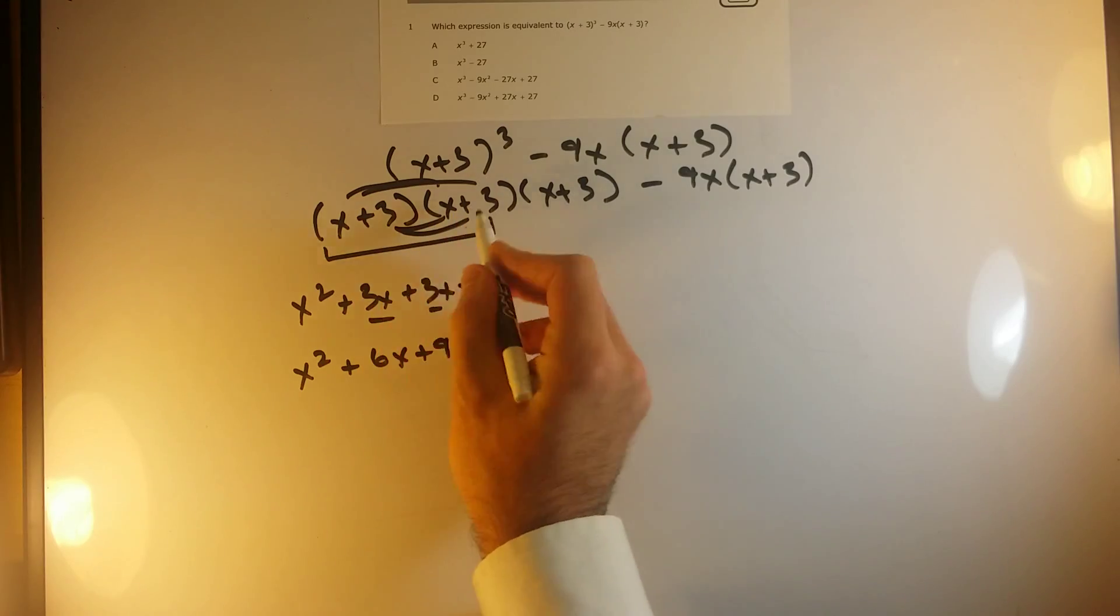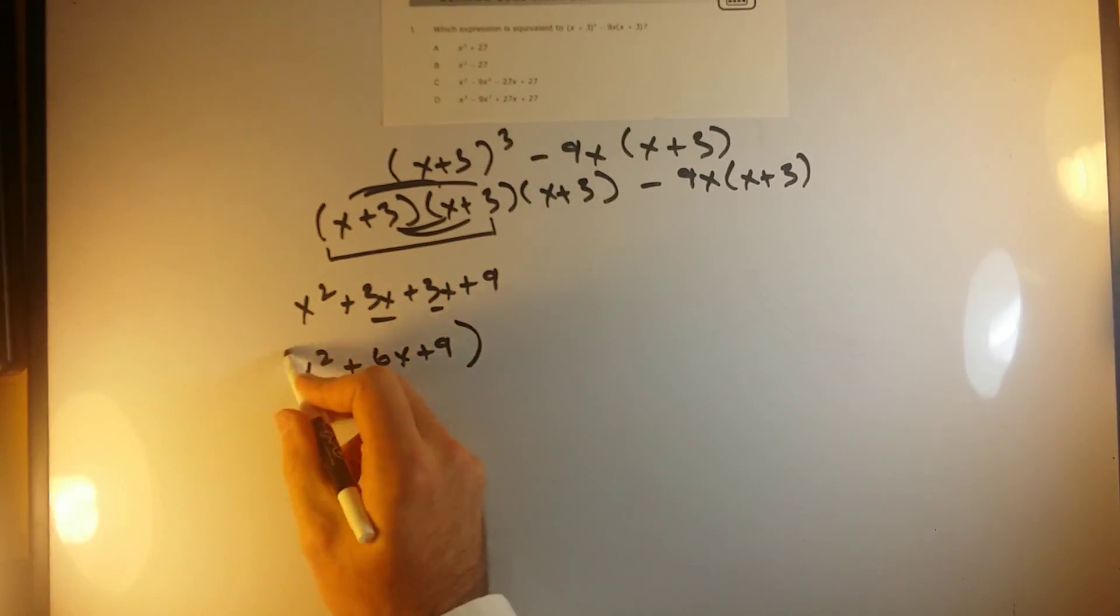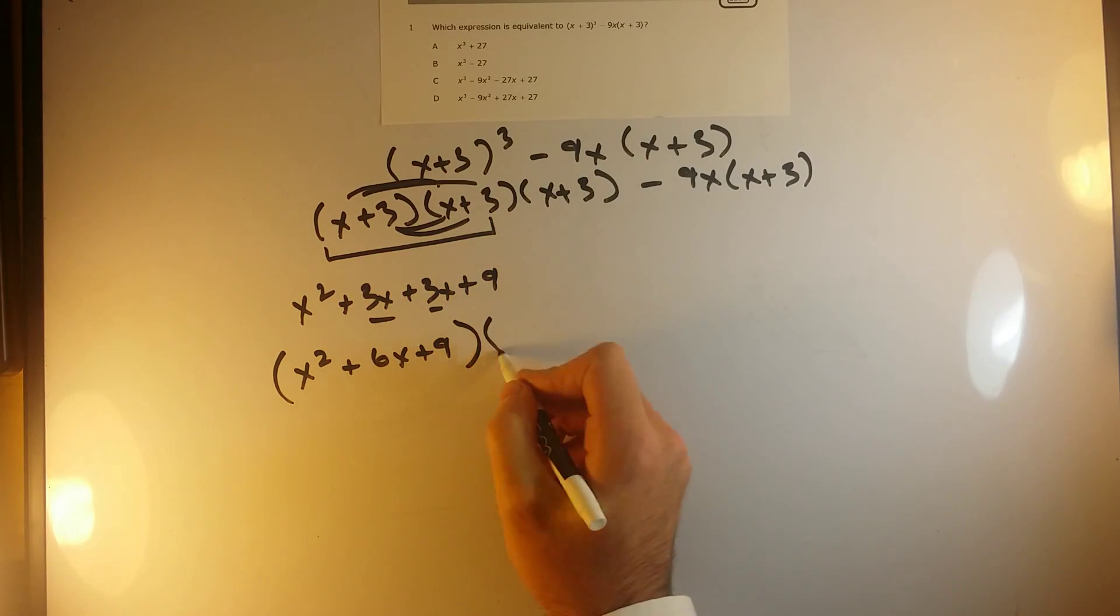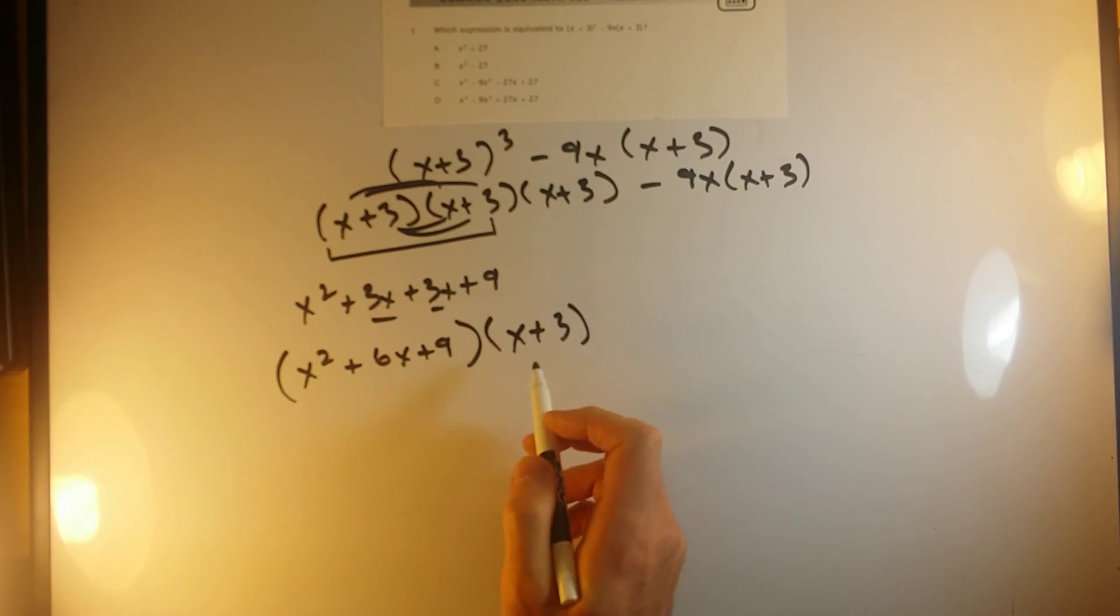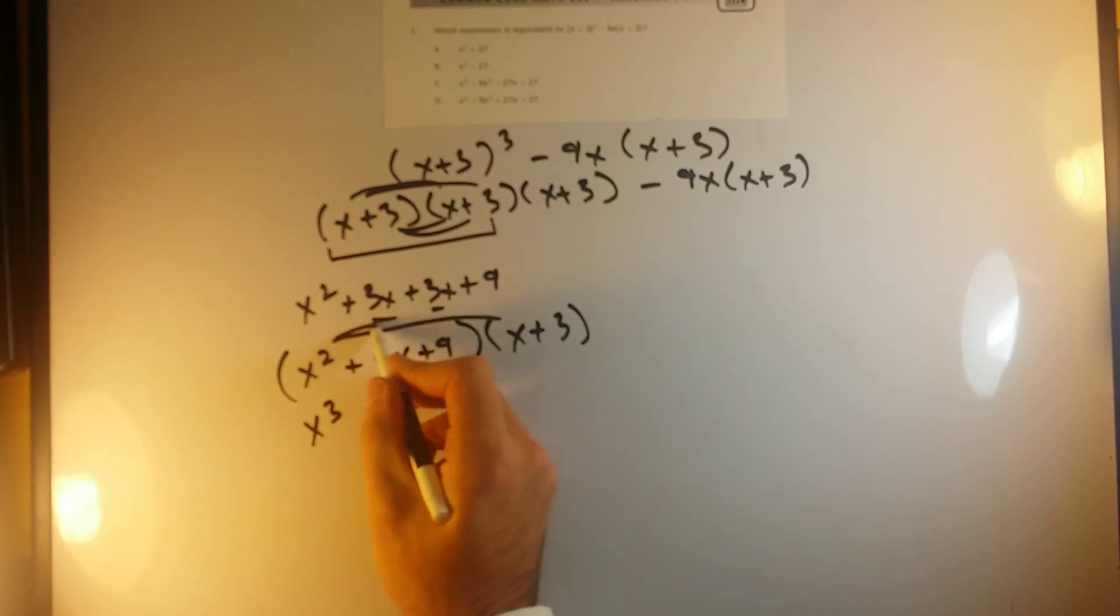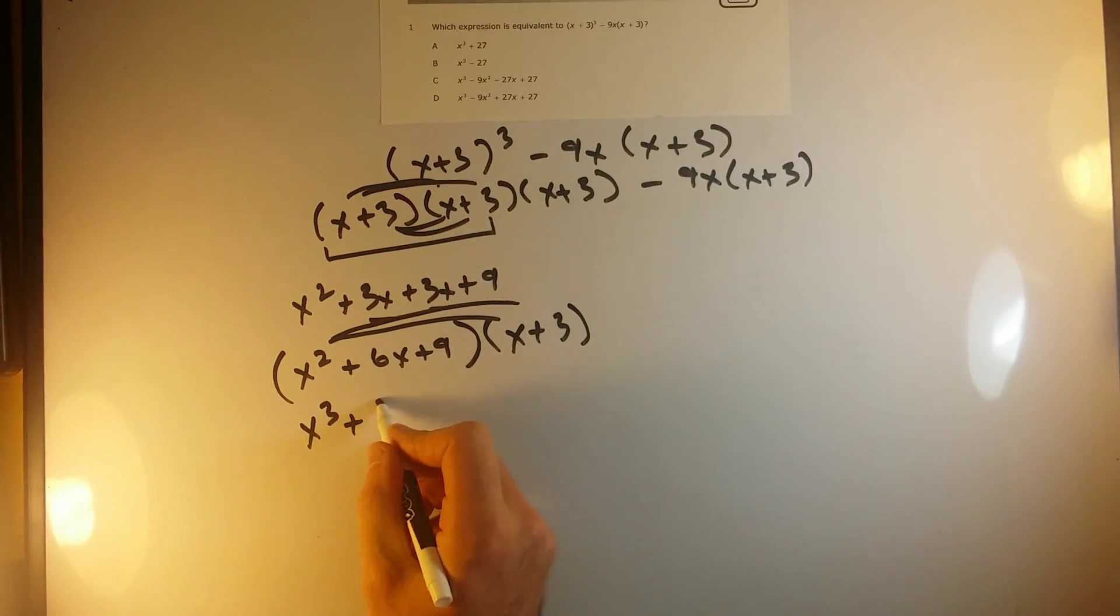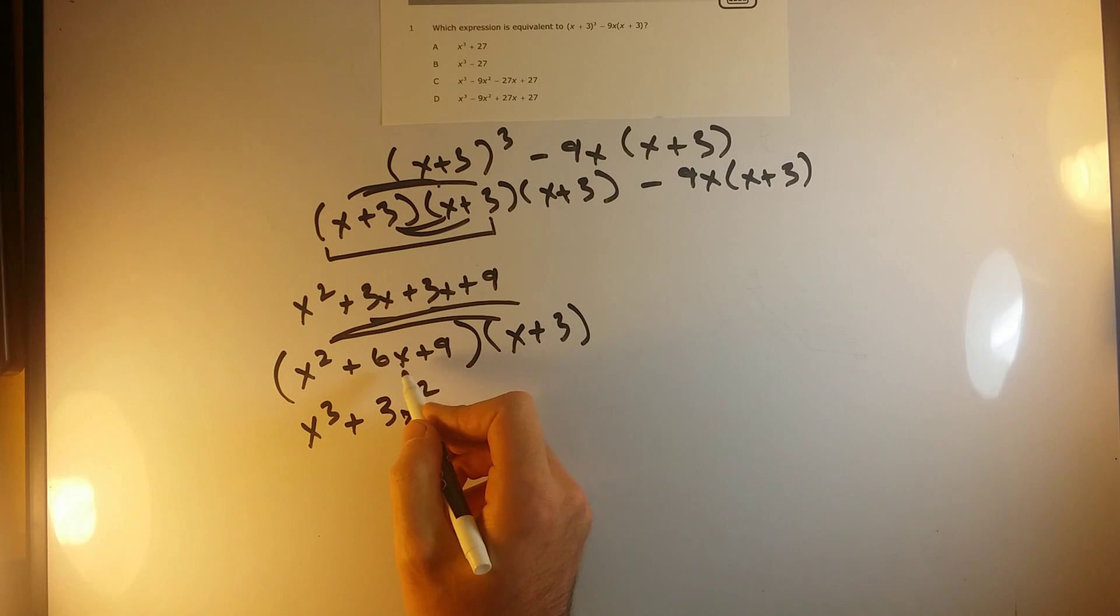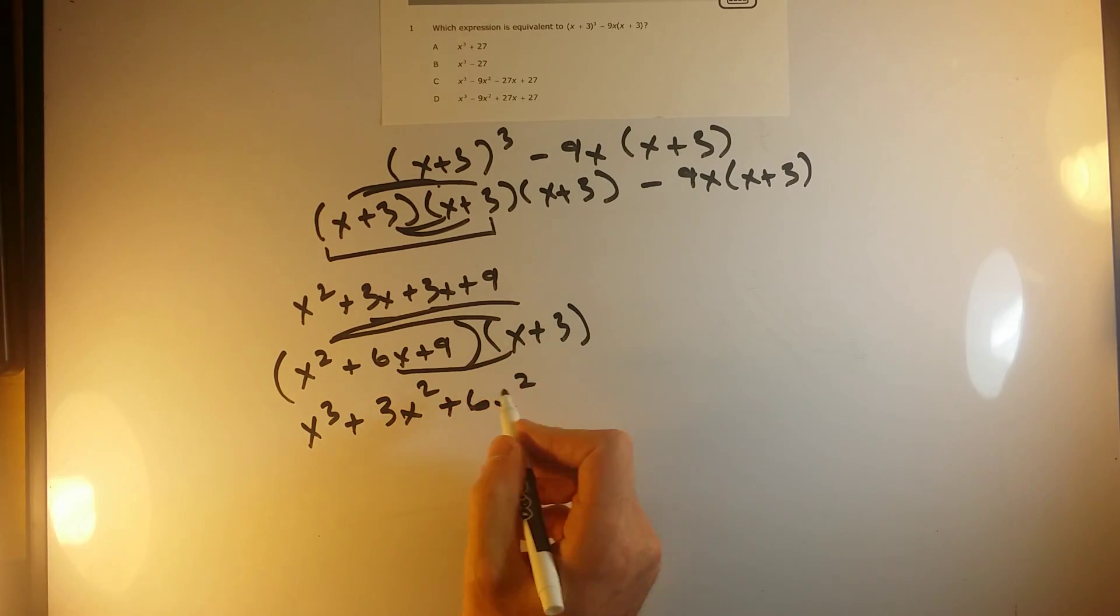So now that I've combined these two polynomials, let me just bring down my last one that I was saving and multiply each of these terms by this. So let's see, x squared times x will give me x cubed. x squared times 3 gives me 3x squared. 6x times x gives me 6x squared.